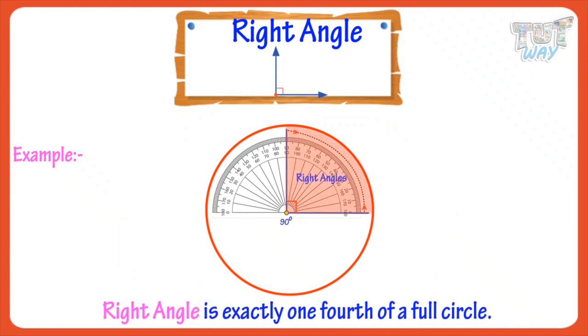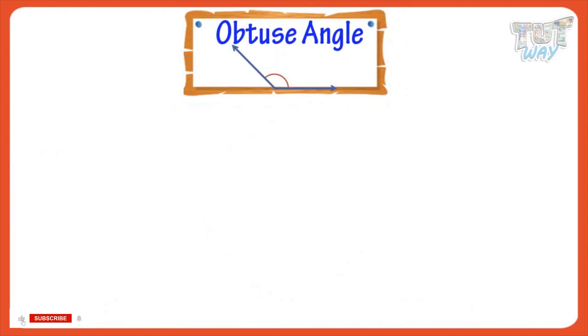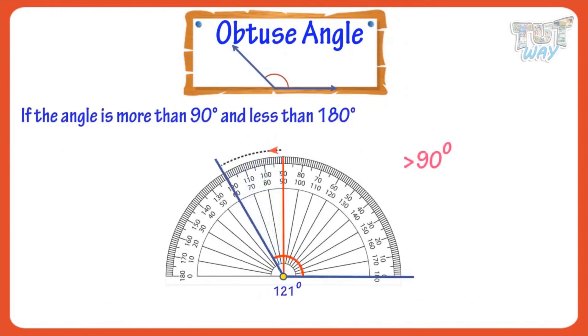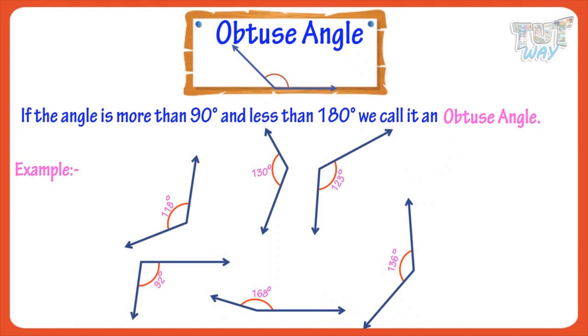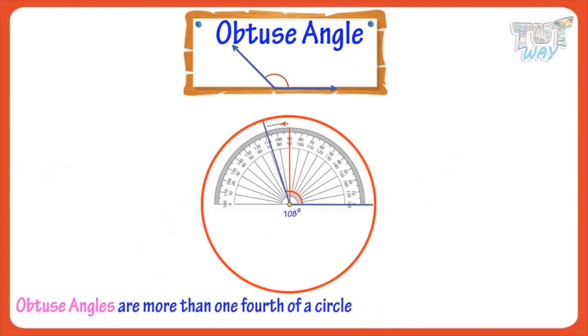Now, let's see what are obtuse angles. If the angle is more than 90 degrees but less than 180 degrees, we call it an obtuse angle. Example of obtuse angles. So, obtuse angles are more than one-fourth of a circle and less than half of a circle.